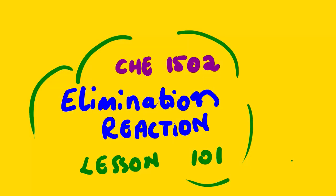Today we'll be looking at Chemistry 1502 and the topic for today is elimination reaction, lesson 101. So far we've covered a number of reactions: hydration, dehydration, substitution reaction, and the acid-catalyzed dehydration of alcohols. Elimination is one of those reactions we'll be discussing. As you can hear from the word 'elimination,' it means you're going to eliminate a few atoms or groups in order to form a new functional group.